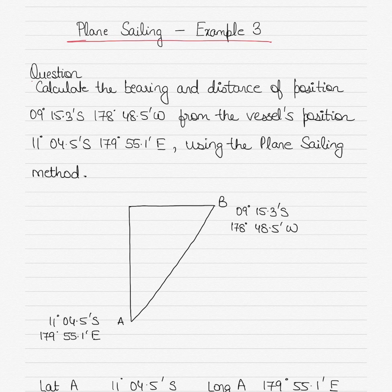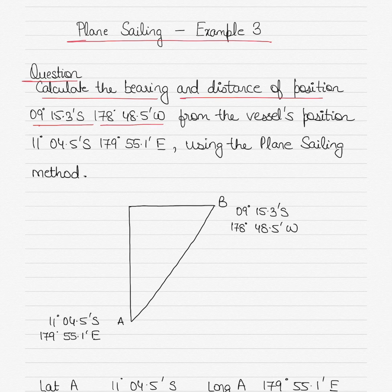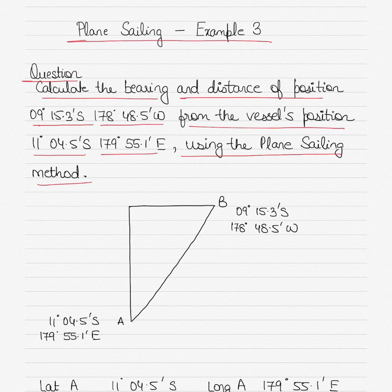So let's get started with the question. We have to calculate the bearing and the distance of position 9°15.3'S 178°48.5'W from the vessel's position 11°4.5'S 179°55.1'E using the plane sailing method. We have normally calculated course and distances between positions, but here you have to read the question carefully — it says calculate the bearing of the first position from the second position.